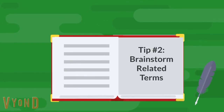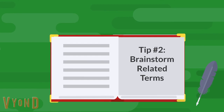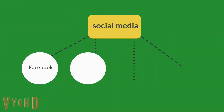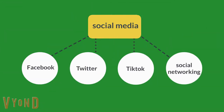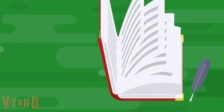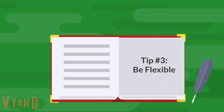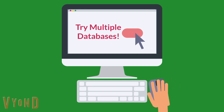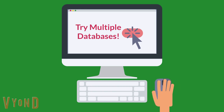Tip number two: brainstorm related terms for your keywords. Different keywords will generate different search results, so coming up with related terms will help you expand your searching. Tip number three: be flexible. Don't limit yourself to just one database — different databases may bring up very different results.